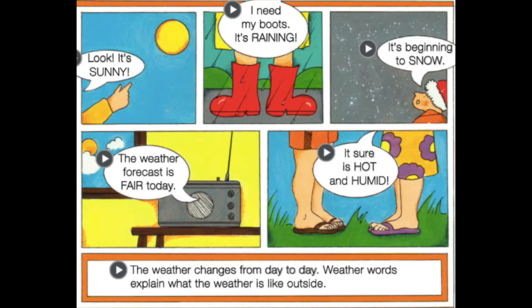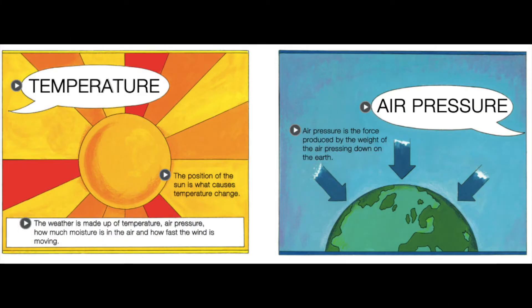The weather changes from day to day. Weather words explain what the weather is like outside. The weather is made up of temperature, air pressure, how much moisture is in the air, and how fast the wind is moving.